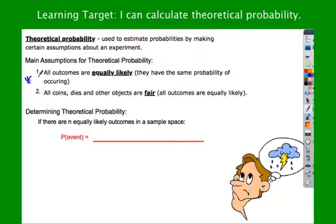We're assuming everything is fair, that everything is equally likely, which we know in real life isn't always true. When I flip a coin, I don't necessarily flip heads 50% of the time all the time. So, determining theoretical probability, notice I've got a fraction bar here. That's because probability, like I said earlier, is a ratio.